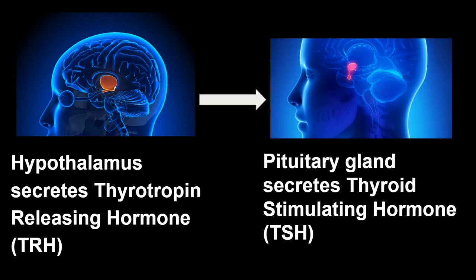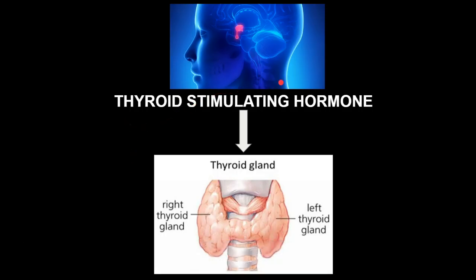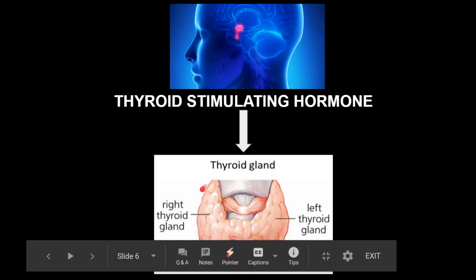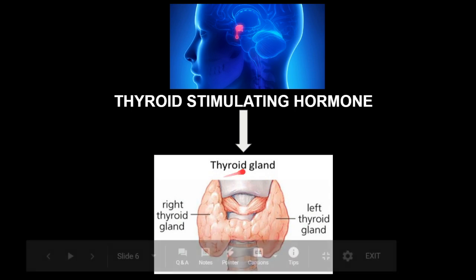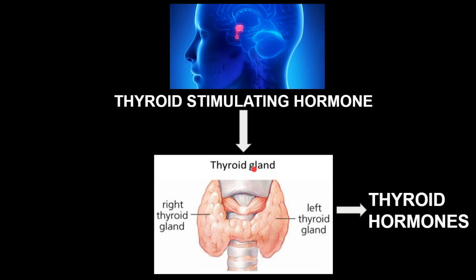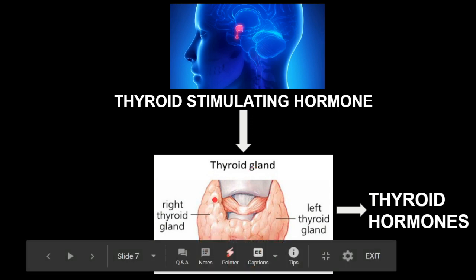So, in the normal pathway: TRH released from the hypothalamus acts on the pituitary gland, and the pituitary gland secretes the thyroid stimulating hormone. This TSH then acts on the thyroid gland. On the surface of the thyroid gland, there are various TSH receptors. The TSH binds to these receptors and stimulates the thyroid gland to secrete the thyroid hormone. This was normal functioning.